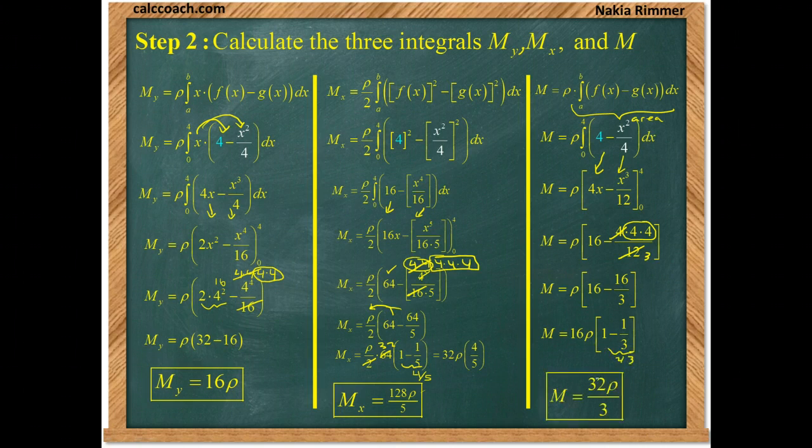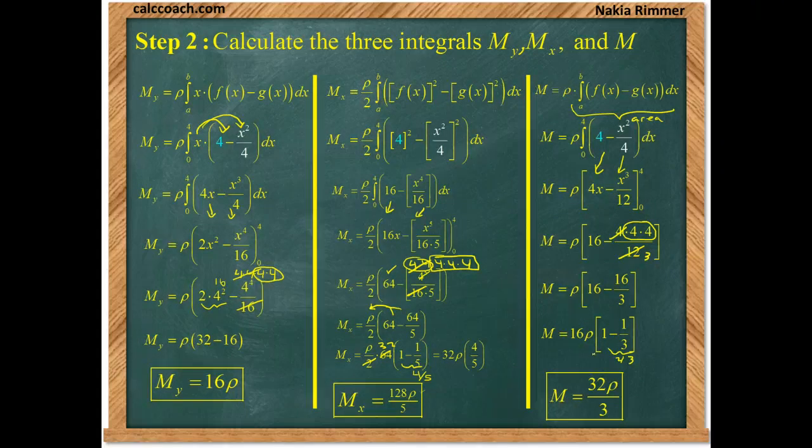If we have 16 times 2 thirds, that's 32 rho over 3. And these are the three important integrals we need.